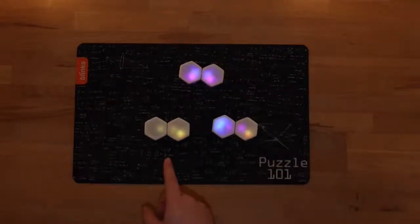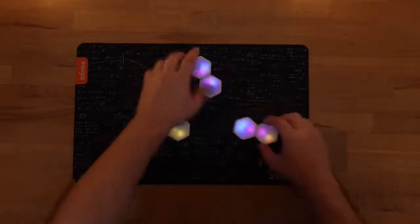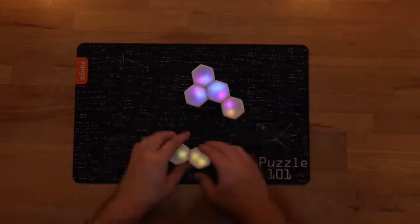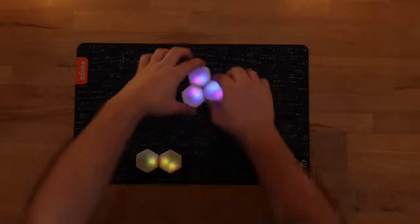To help a player determine if they've matched sides correctly, the lights will pulse on and off when correctly aligned. Unsolved sides will remain fully lit.